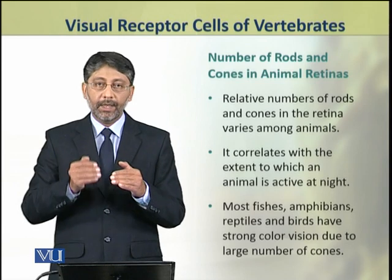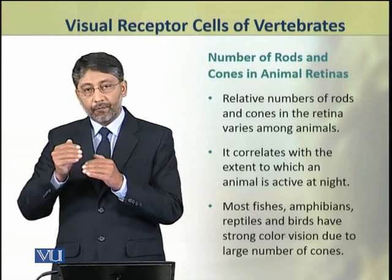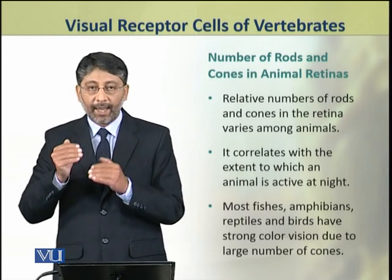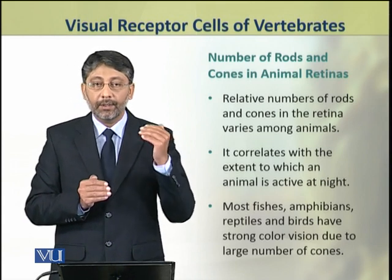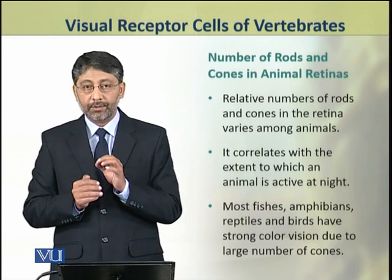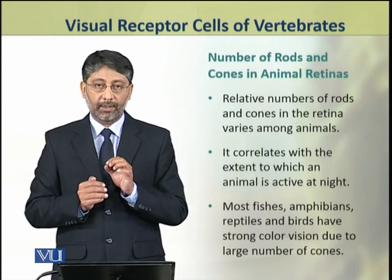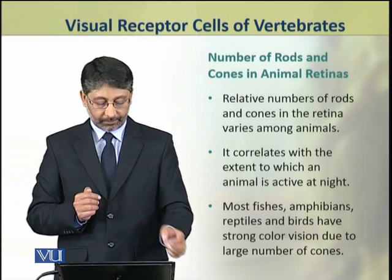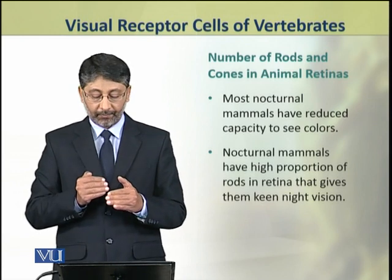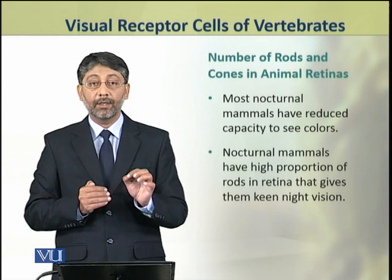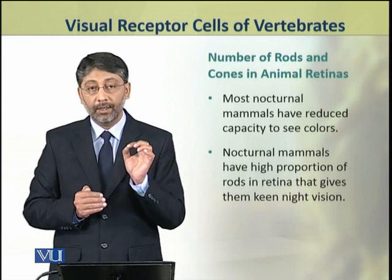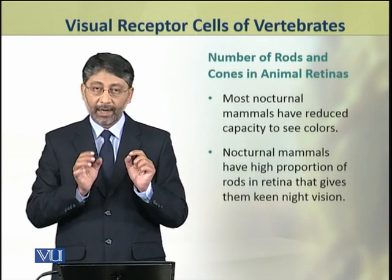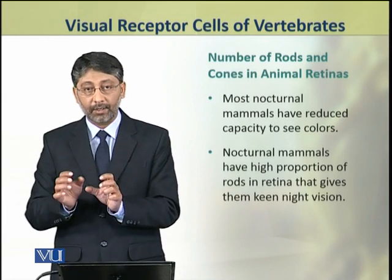The number of rods and cones varies in animal retinas, and this number correlates with the extent to which an animal is active at night. Most fishes, amphibians, reptiles, and birds have well-developed color vision because they have a large number of cone cells. However, most mammals have reduced capacity to see colors, especially nocturnal mammals, which have a high proportion of rods in their retinas, giving them much better night vision.